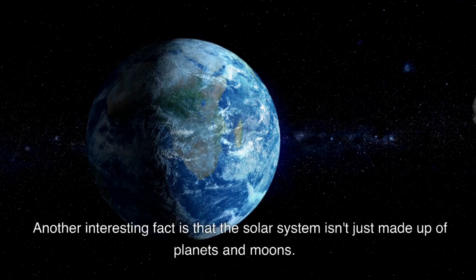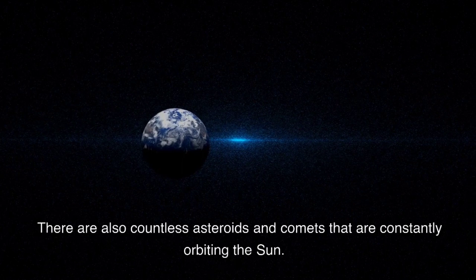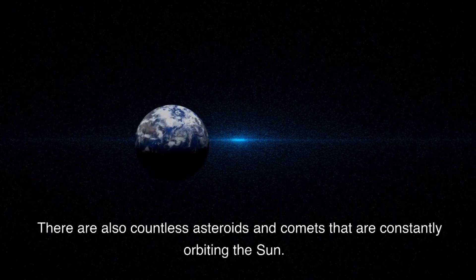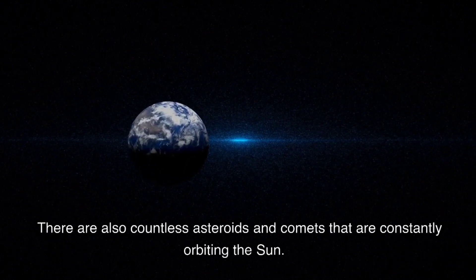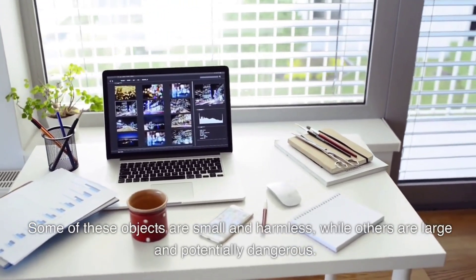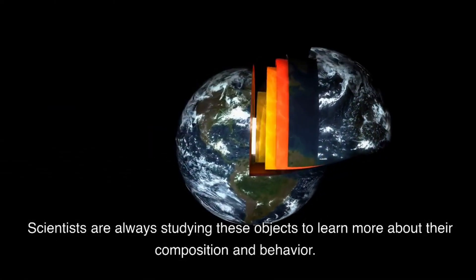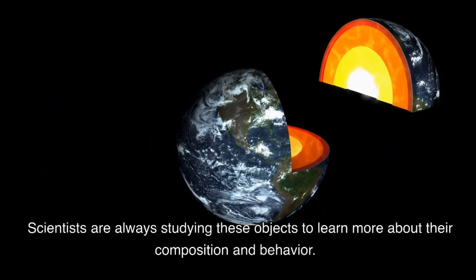Another interesting fact is that the solar system isn't just made up of planets and moons. There are also countless asteroids and comets that are constantly orbiting the sun. Some of these objects are small and harmless, while others are large and potentially dangerous. Scientists are always studying these objects to learn more about their composition and behavior.